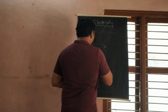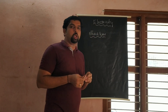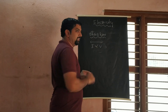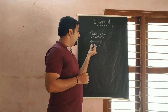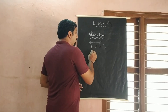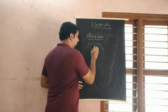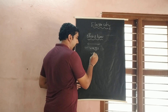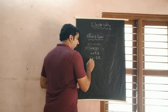Ohm's law states that at constant temperature, the current flowing through a conductor is directly proportional to the potential difference. The symbol for current is I and potential difference is V, so I is proportional to V, or V is proportional to I. To write this as a formula, we remove the proportionality symbol and introduce a constant R, giving us V = IR, which is the formula for Ohm's law.